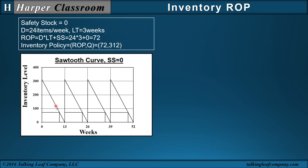When our inventory level drops to 72, which is equivalent to 3 weeks of demand, we place the order, and in 3 weeks we receive it. But during this lead time of 3 weeks, if our demand exceeds 24 items a week, we will have demand on the system but no inventory to satisfy it — that's called stock out. To guard against stock out, we add safety stock.